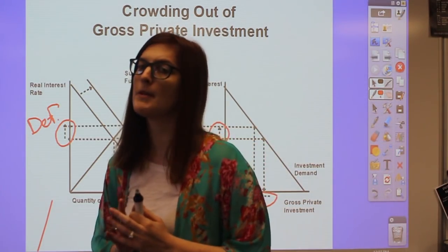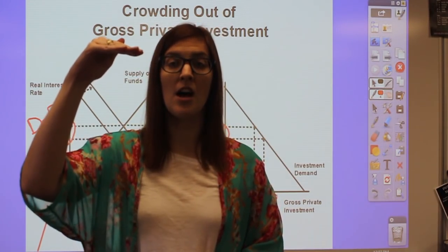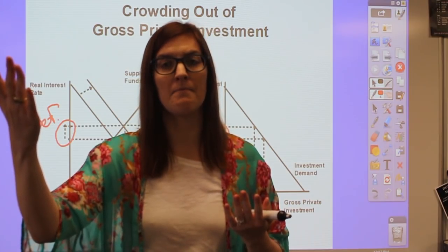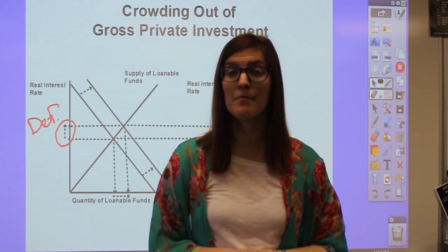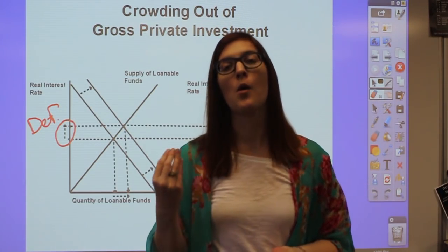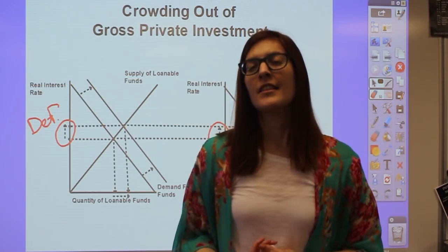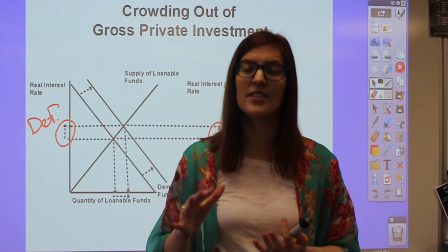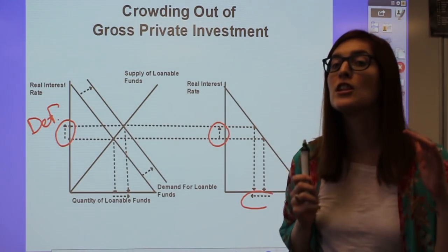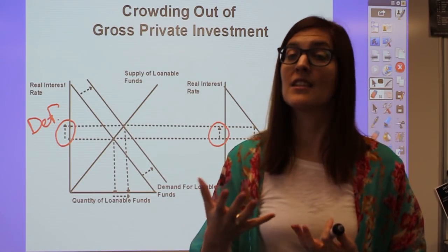There are two reasons we still use expansionary fiscal policy despite crowding out. First, if the government increases C and G by a lot—since C is the largest component—the small decrease in I still results in GDP going up overall. Second, if the Federal Reserve uses expansionary monetary policy simultaneously, increasing the money supply and driving down nominal interest rates, the two interest rate effects cancel out and crowding out isn't as big a problem. Classical economists still criticize this because gross private investment drives long-run economic growth—hurting it now harms the long run. Keynesians, however, care more about the short run and say the long run will fix itself.